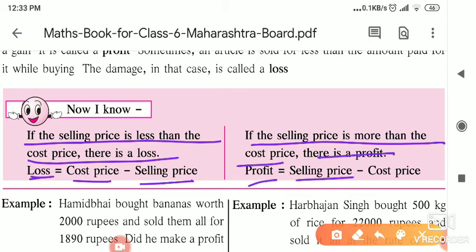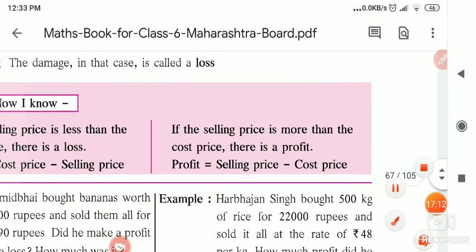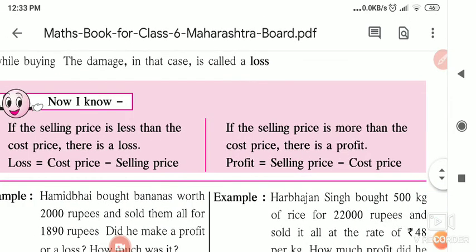What is the loss formula? Loss is equal to CP minus SP, that is cost price minus selling price. And if the selling price is more than the cost price, there is a profit. Profit is equal to selling price minus cost price.